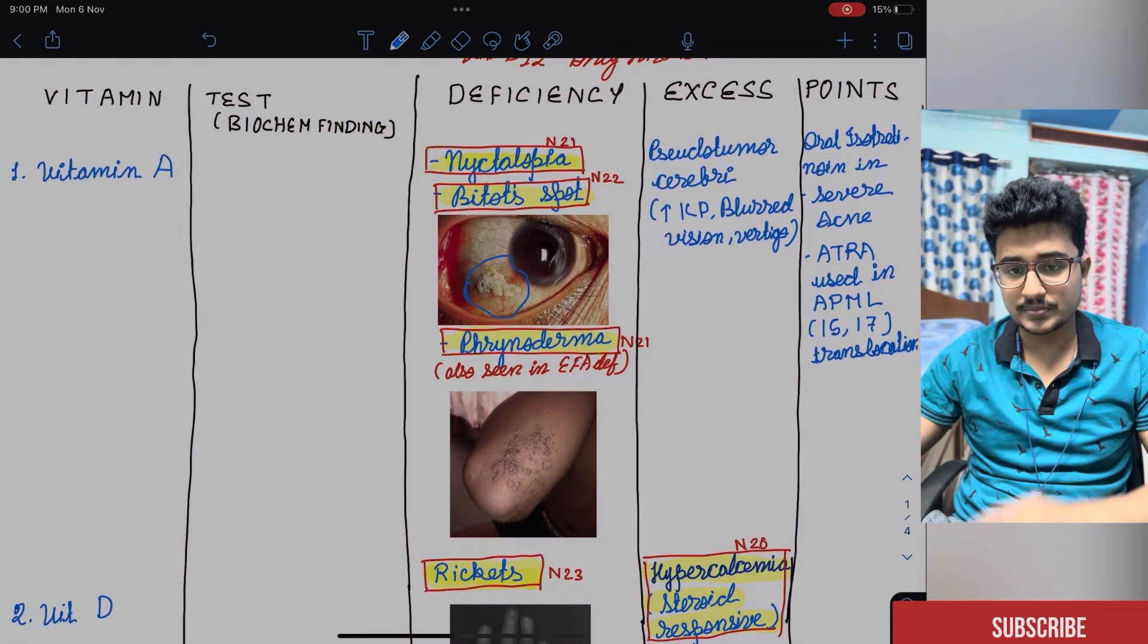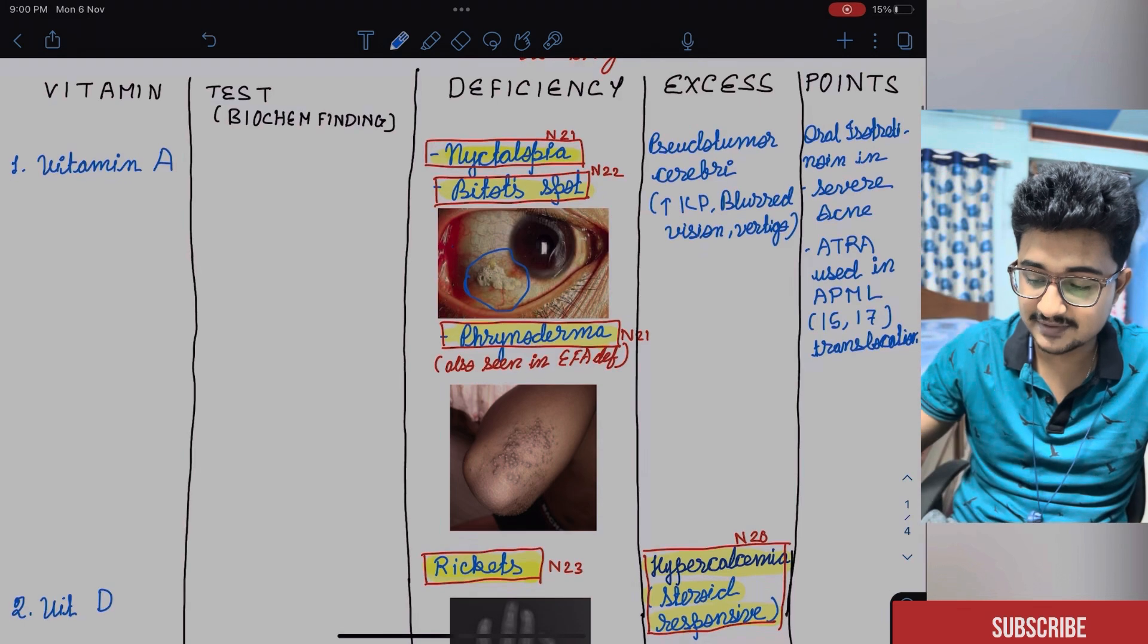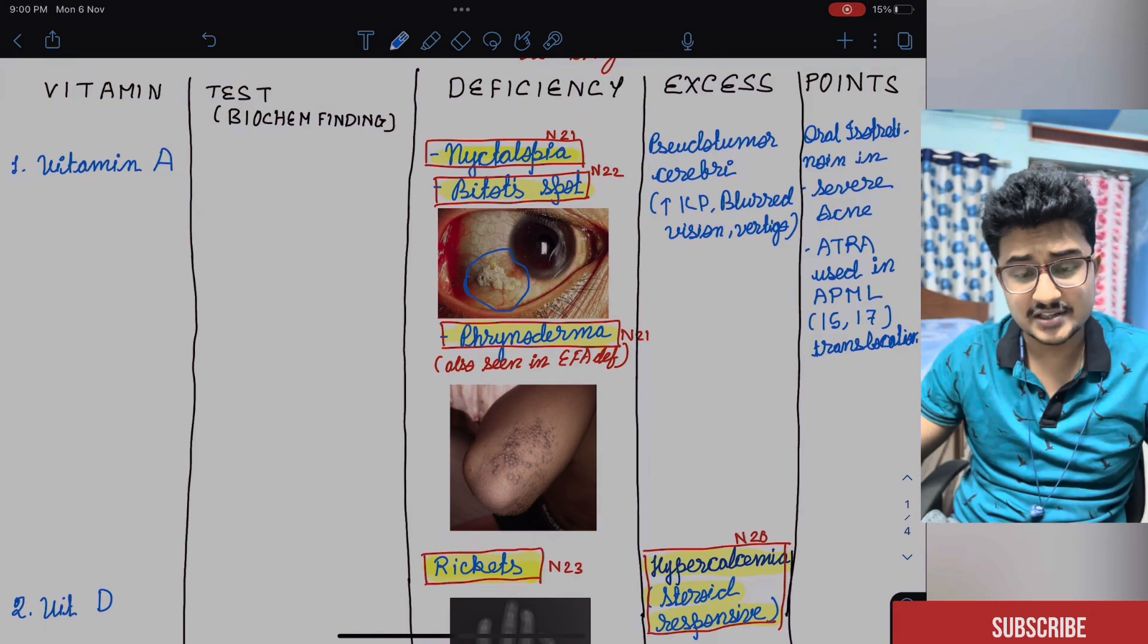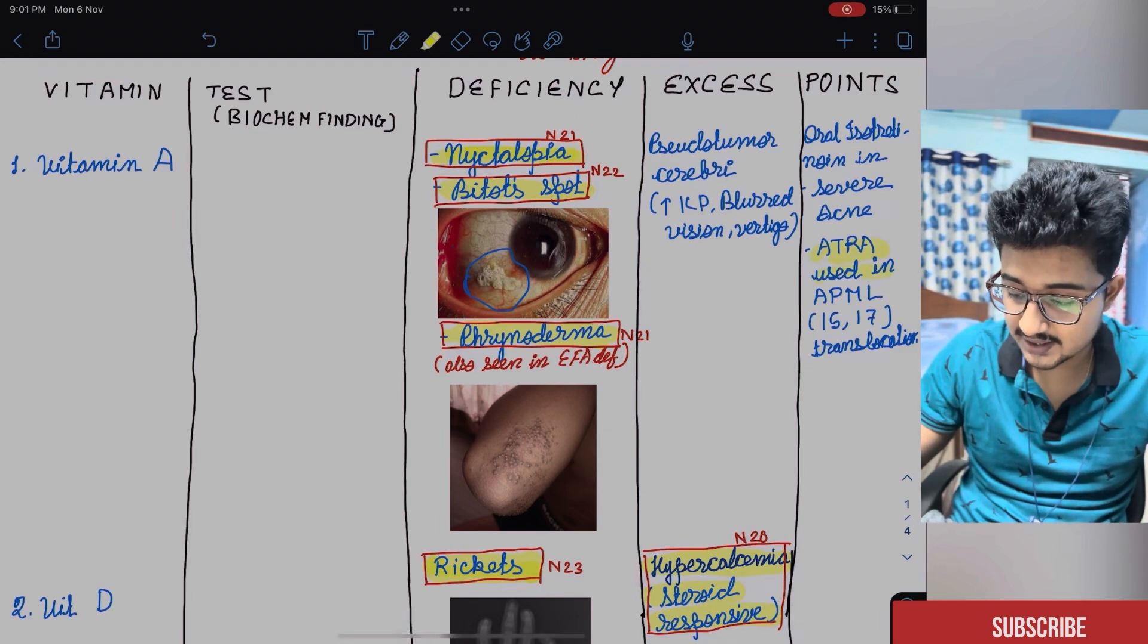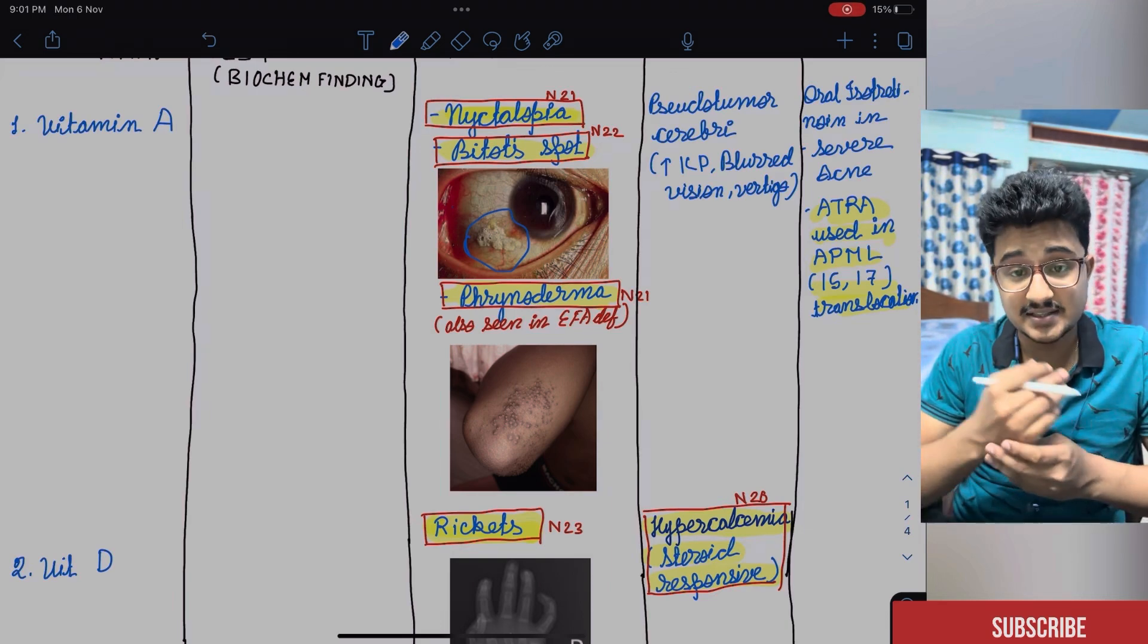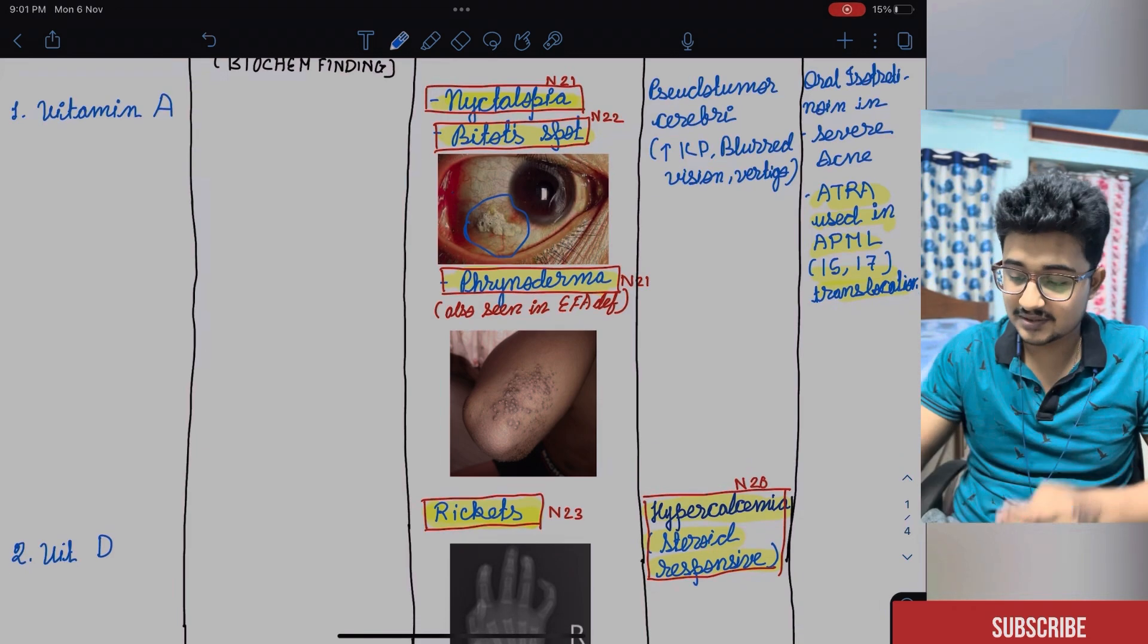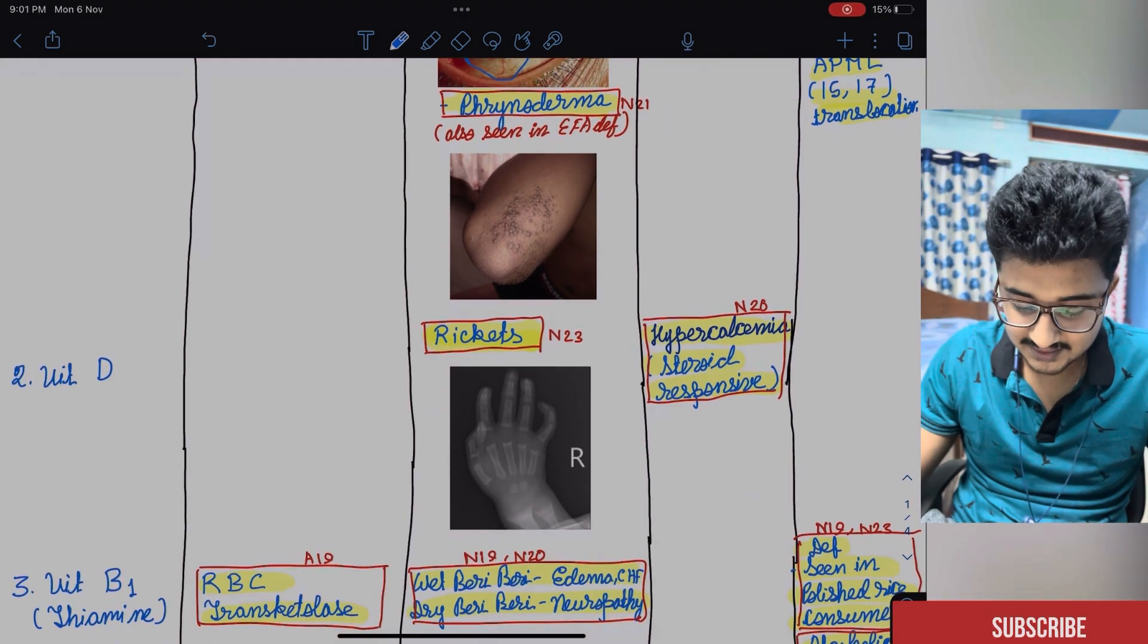In excess it can cause pseudotumor cerebri though it has not been asked till now but I have given it causes raised ICP and visual disturbances. Oral isotretinoin is given in severe acne and ATRA, all trans-retinoic acid, is used in APML and this was also asked in PYQ. APML in 15-17 translocation seen in the APML responds very well and if the ATRA is responding then there is something called the reconstitution syndrome in which pulmonary infiltrates are seen and all things.